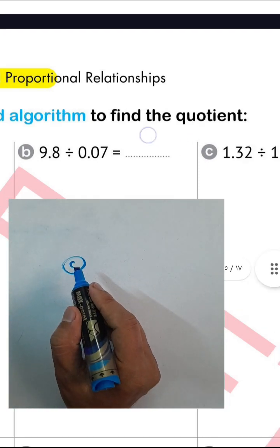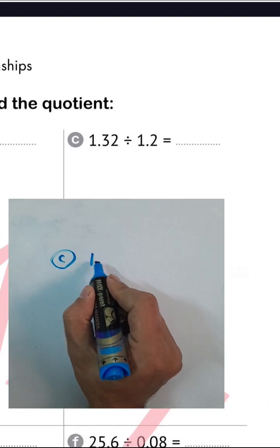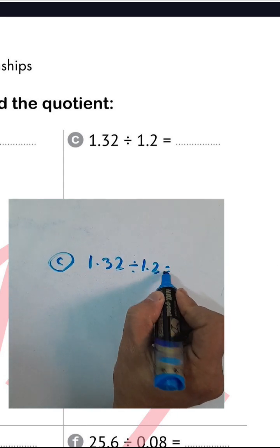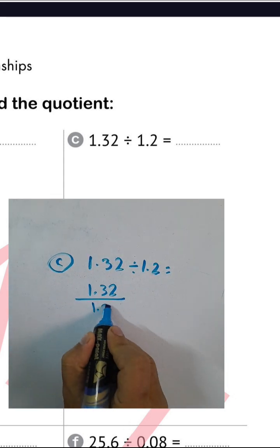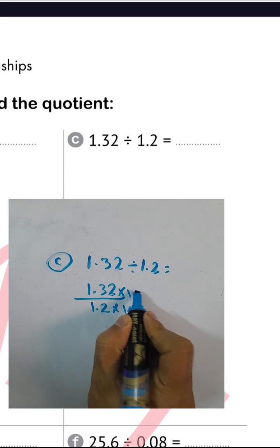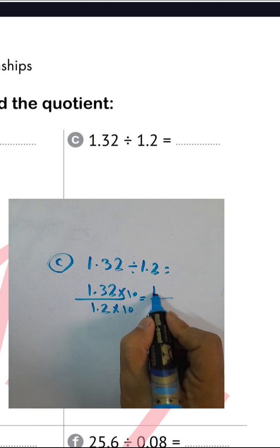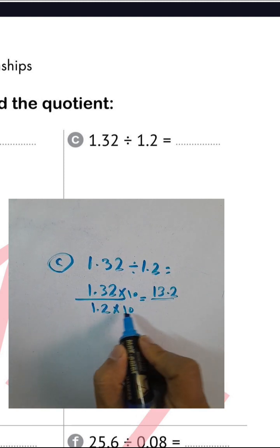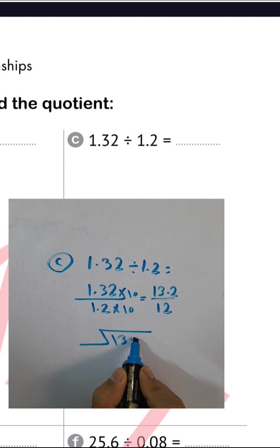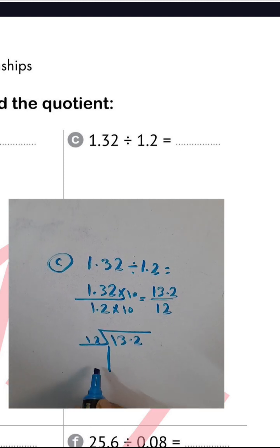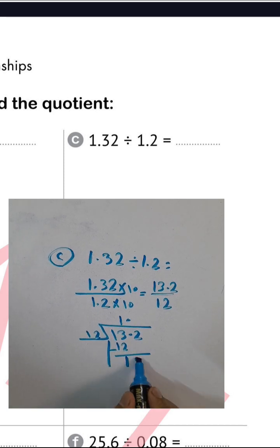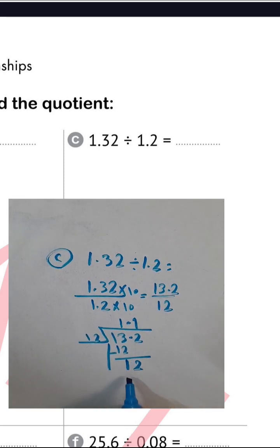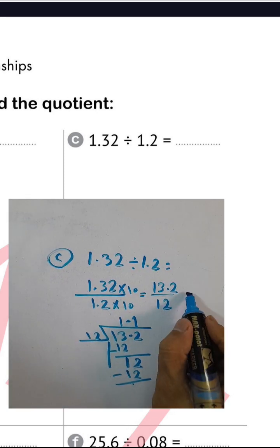Letter (c): 1.32 divided by 1.2. Multiply both numerator and denominator by 10 to clear the decimal in the divisor. This gives 13.2 divided by 12. 13 divided by 12 equals 1; 1 times 12 equals 12; find the difference and put the decimal point outside. Drop down 2: 12 divided by 12 equals 1. The result is 1.1.